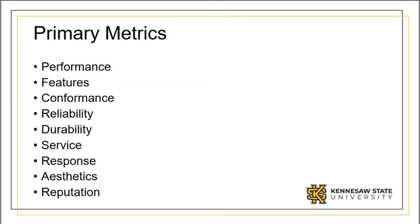Garvin and Besterfield, two luminaries in Six Sigma, suggested nine dimensions of quality measurement. These dimensions are framed in terms of a product. Performance pertains to the primary features of the product. Features is indicative of the secondary features added to the product. Conformance refers to obtaining a product that meets fit, form, and function. Reliability describes the dynamic quality of a product over time.